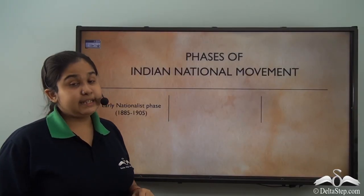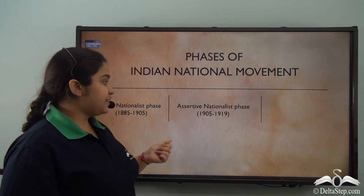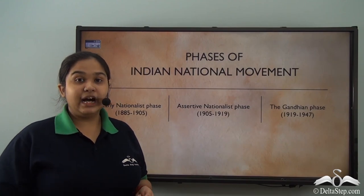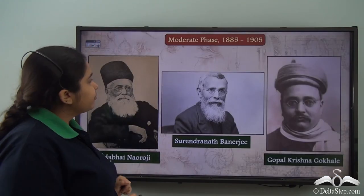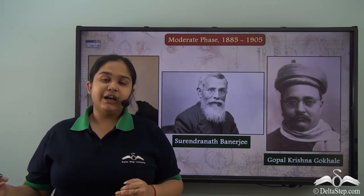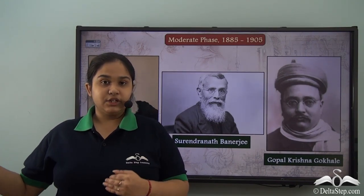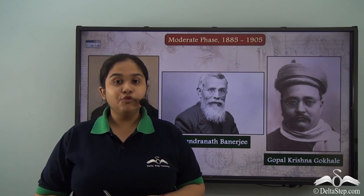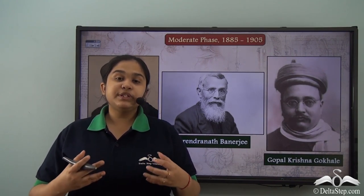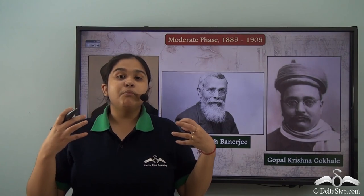The Indian national movement can be divided into three phases: the early nationalist phase, the assertive nationalist phase, and the Gandhian phase or Gandhian era. There were several political developments that finally led to the mass phase of the nationalist movement. The forerunners of the same were called the moderates, a group of people who were the early nationalists.